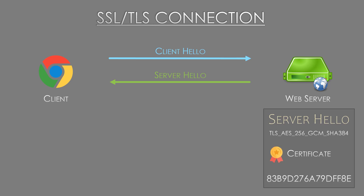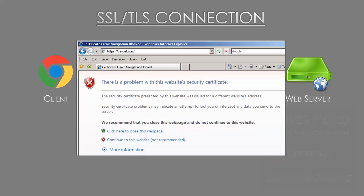For our example, we'll assume they agreed on a cipher suite that uses RSA. The server responds with a hello message of its own, which includes the cipher it has chosen, its certificate, and a second random number. The certificate is a way for the server to share its public key with the client and a way for the client to verify the server's identity. The client now verifies the server certificate — if you've ever seen a certificate error in your browser, you've seen what happens when there's a problem.